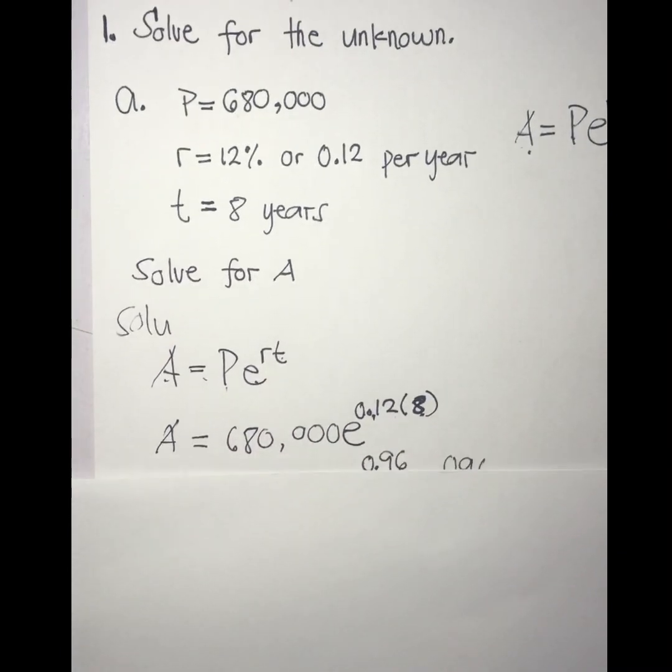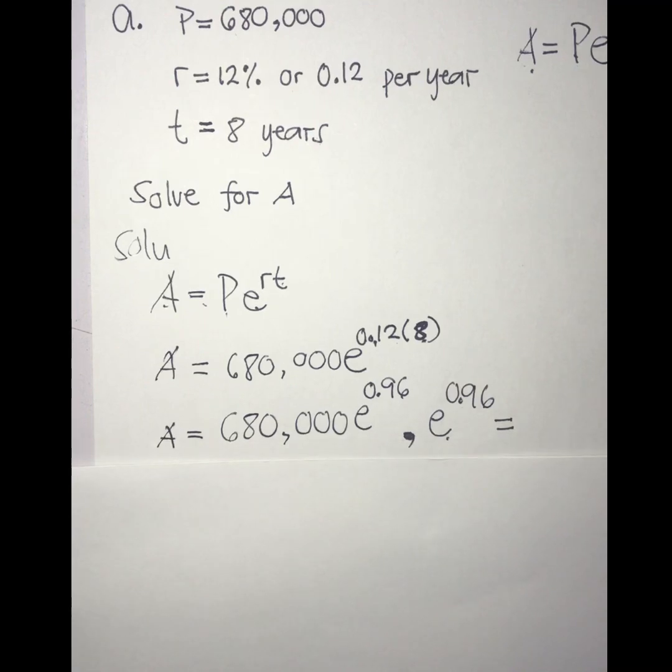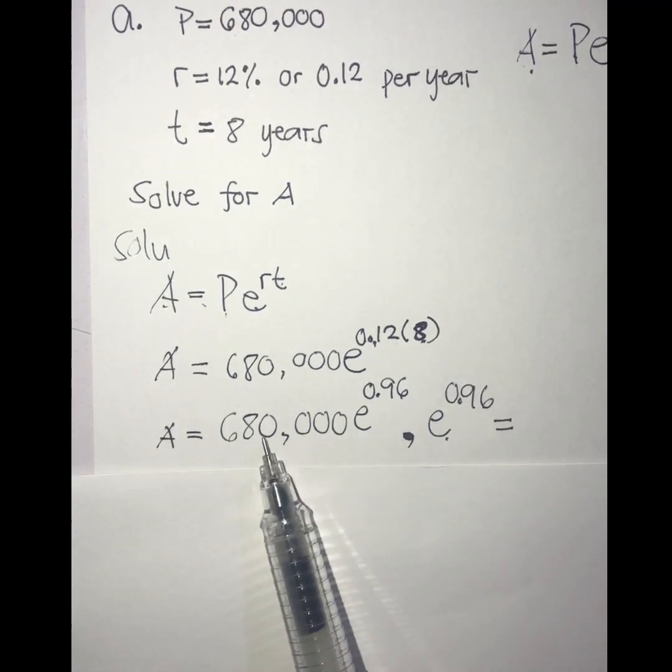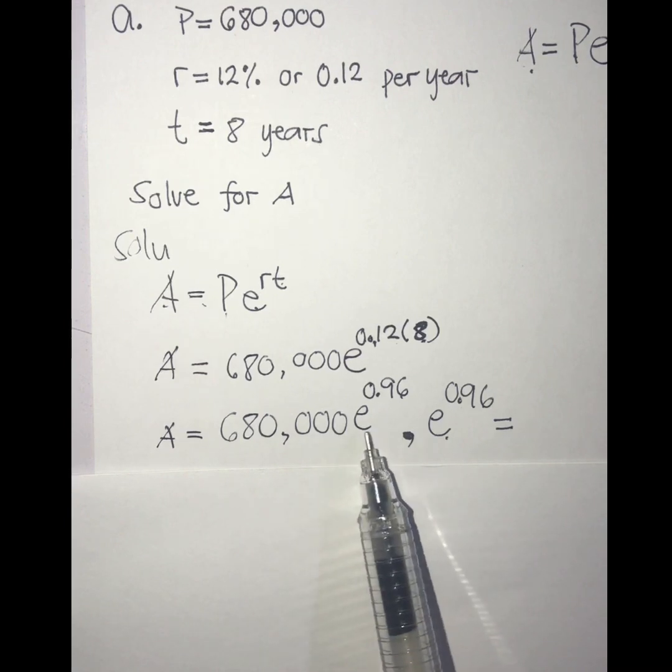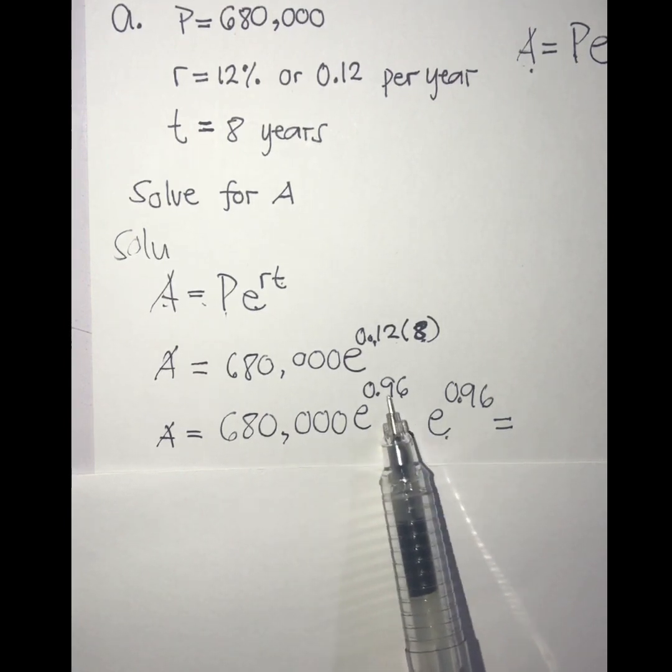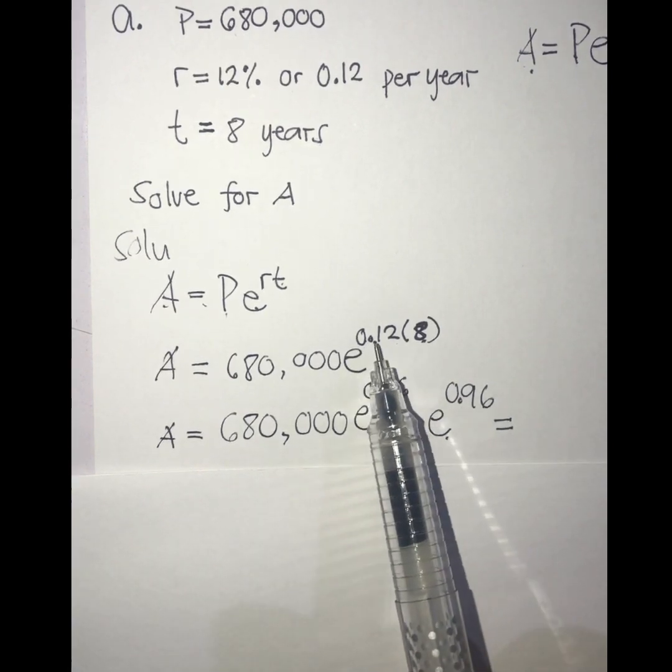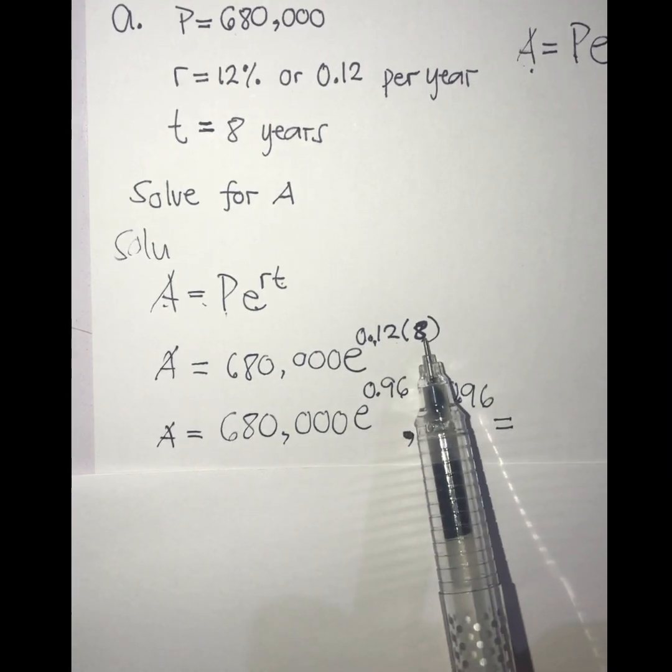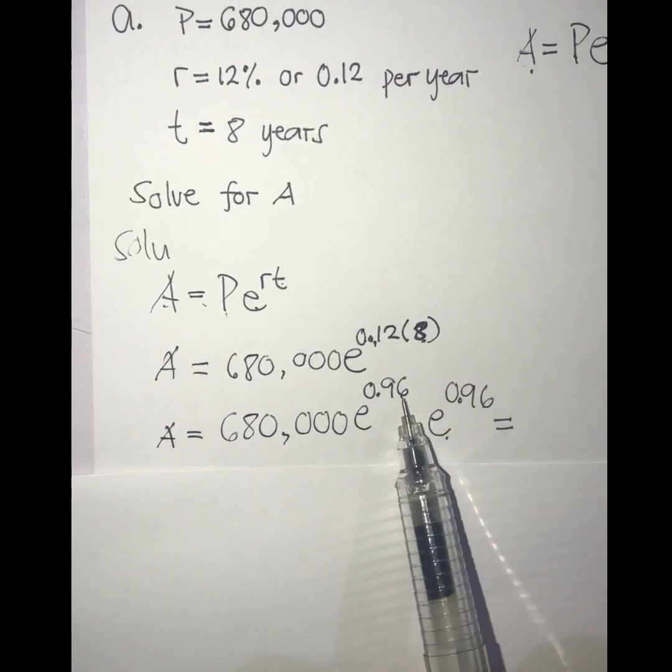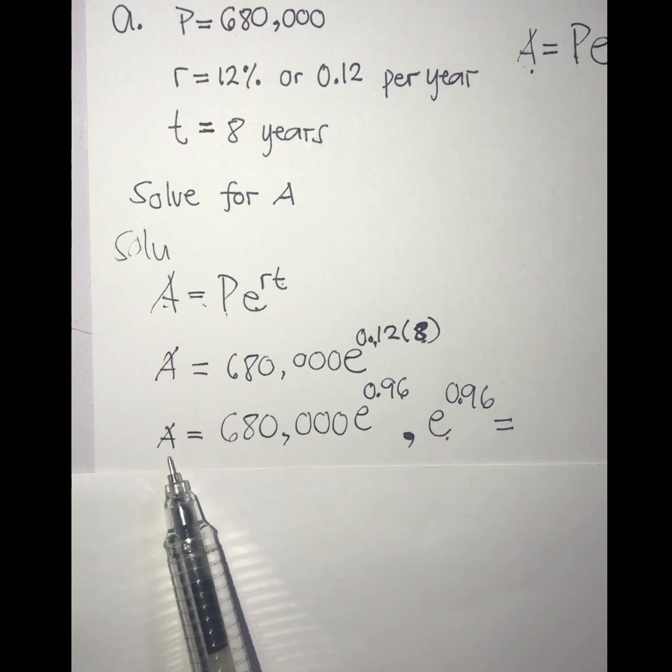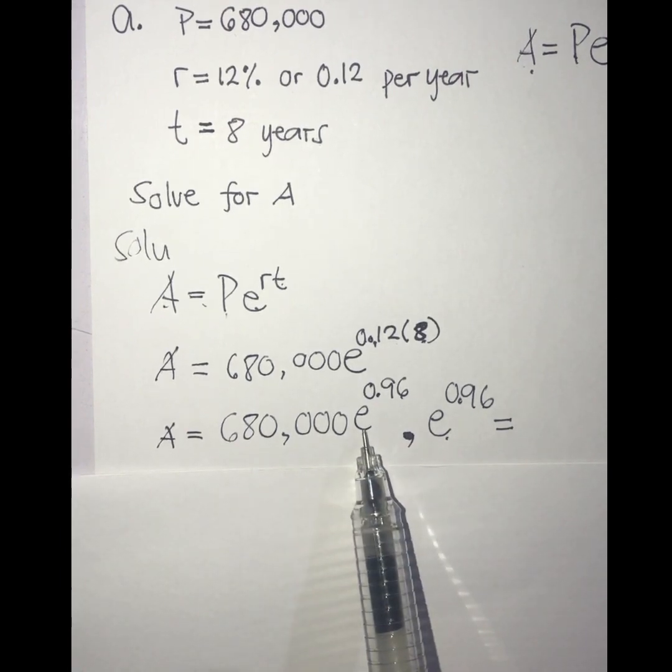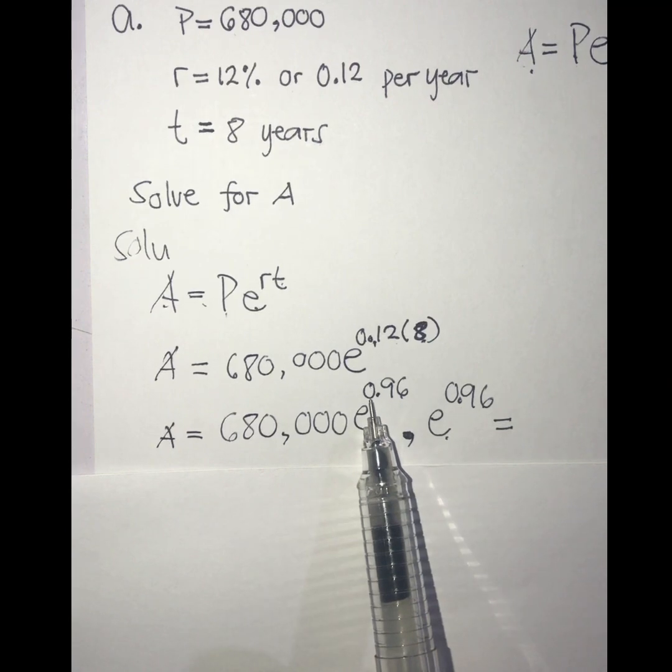So moving forward, we have here A equals 680,000 times e raised to the power of 0.96. 0.96 is from 0.12 times 8. 0.12 times 8 is equal to 0.96.